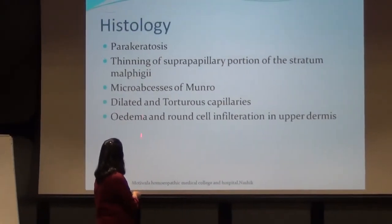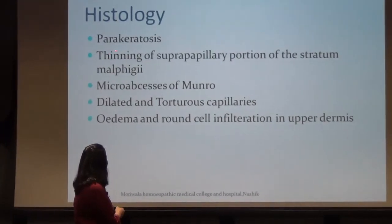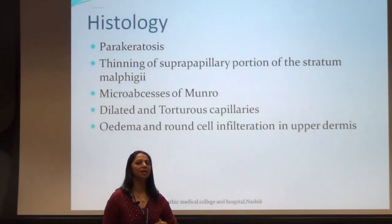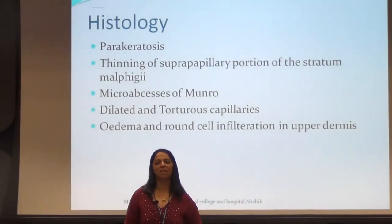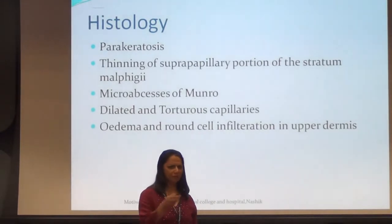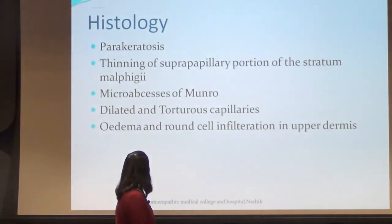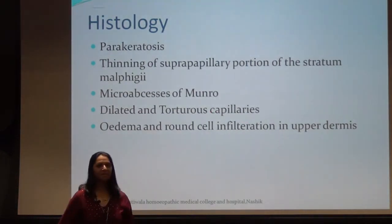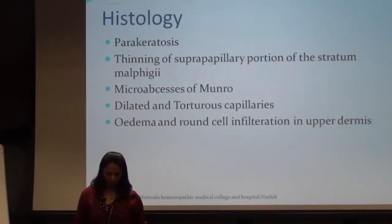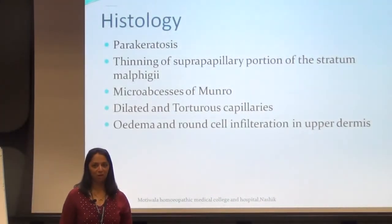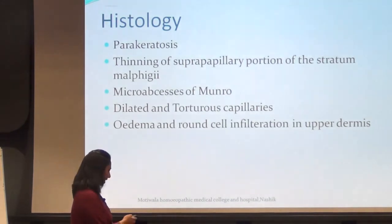So in psoriasis we see parakeratosis and micro-abscesses of Munro. Similarly, the malphigian layer above the stratum germinativum gets thinned off for the same reason — dilated tortuous capillaries with edema and infiltration around the cells. This was the pathophysiology of psoriasis.